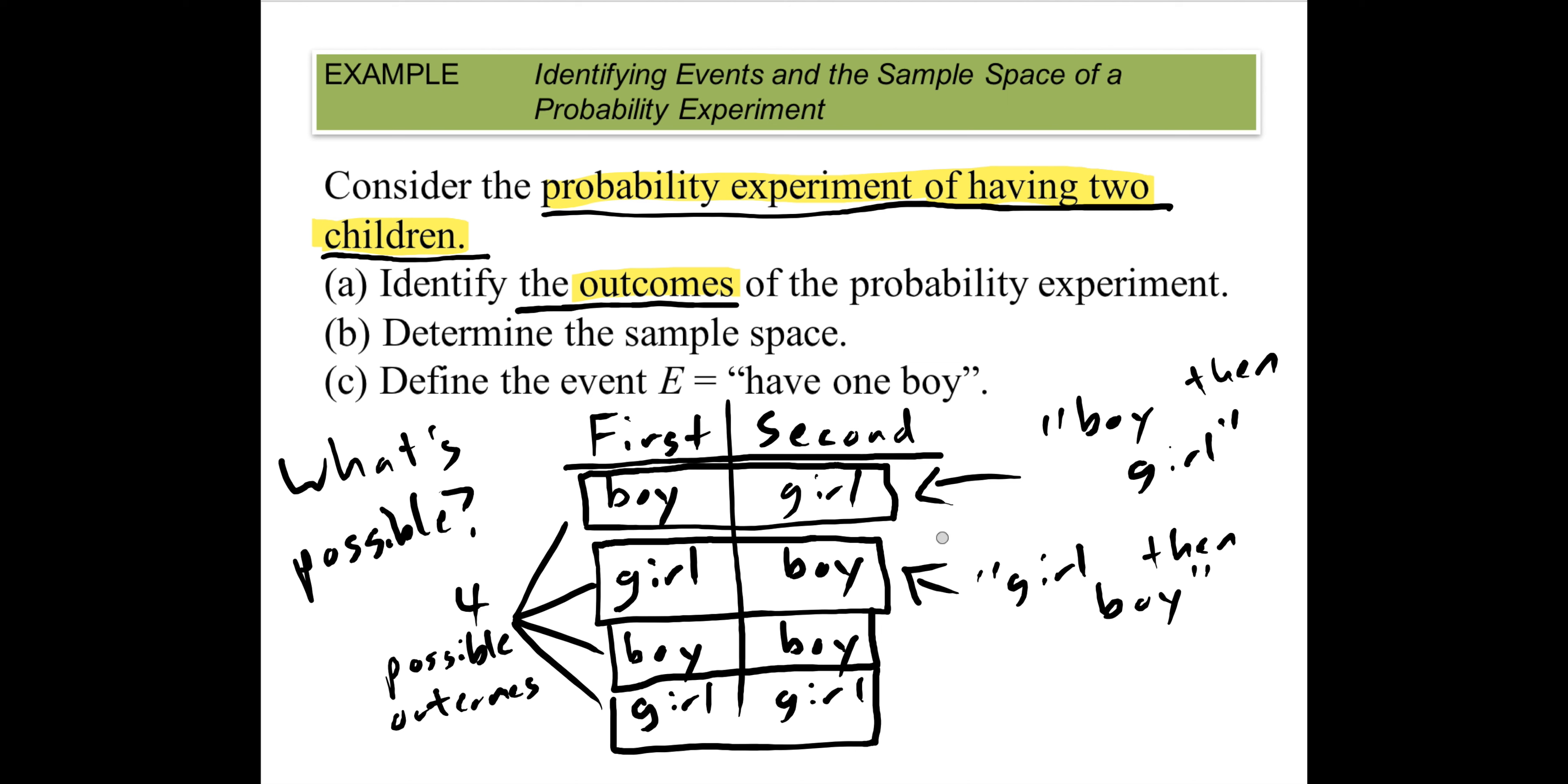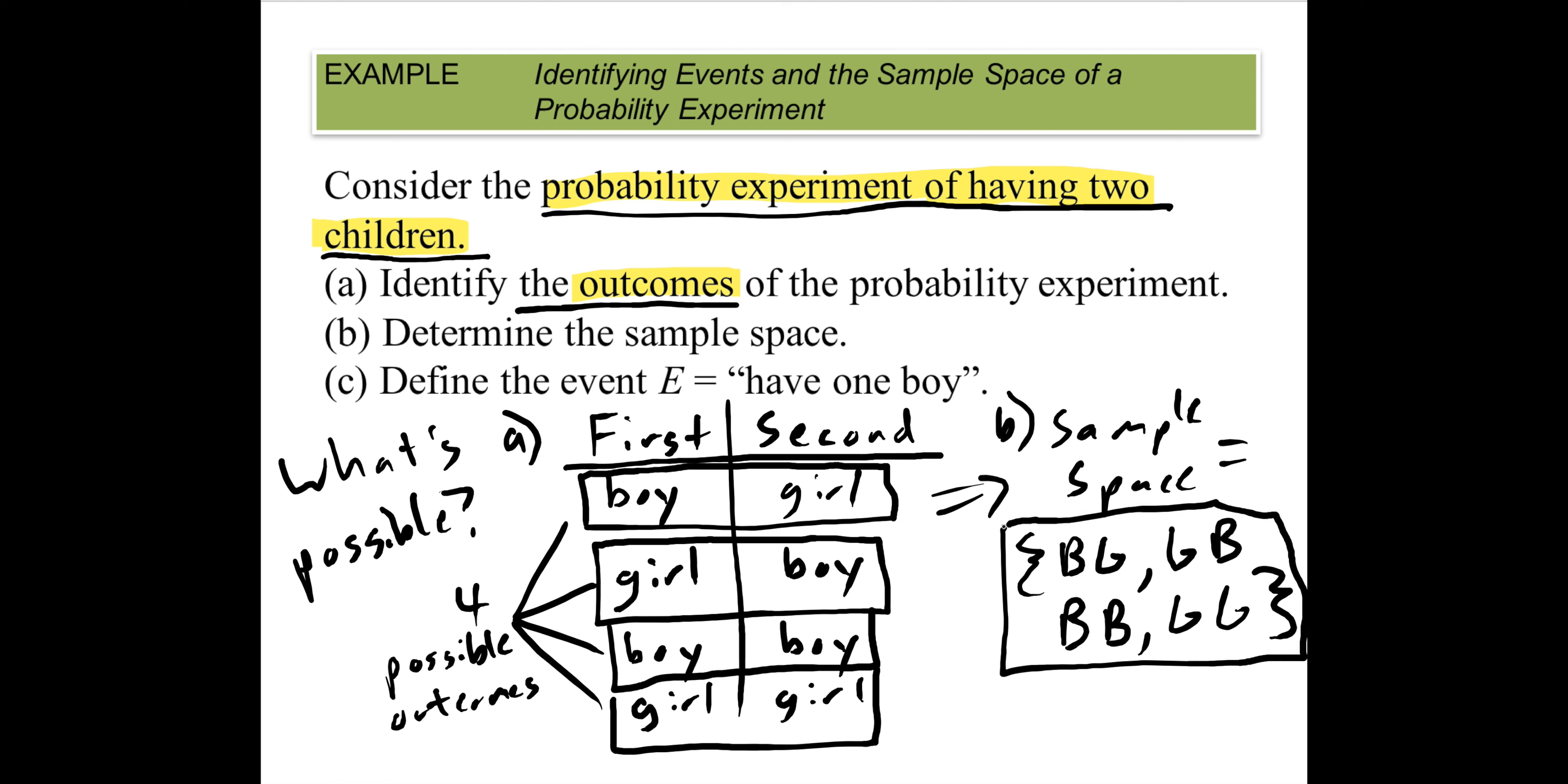So the sample space is going to be just listing these in a nice group. What would my sample space look like? Maybe I'll abbreviate and use B for boy and G for girl. I could have boy-girl, or I could have girl-boy, or I could have boy-boy, or I could have girl-girl. Just putting these four outcomes together in a nice little group here means I'm doing something fancy called giving the sample space—all the possible outcomes.